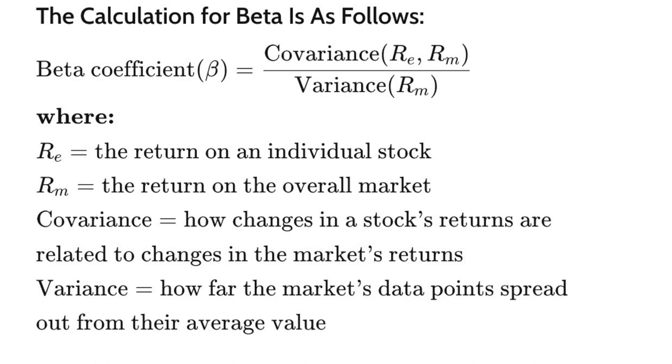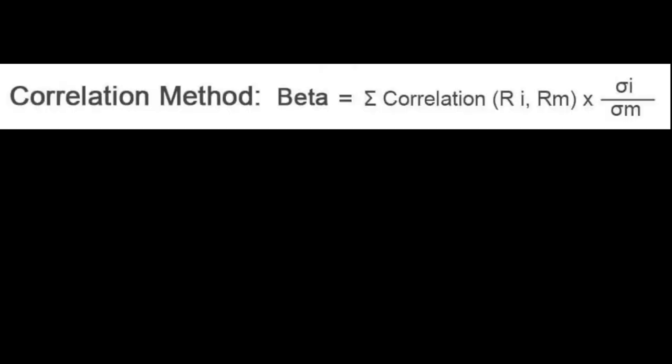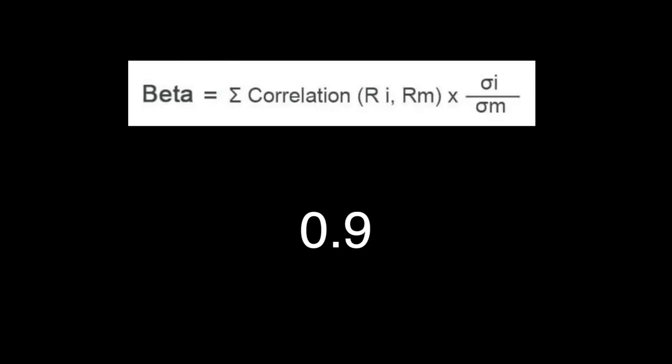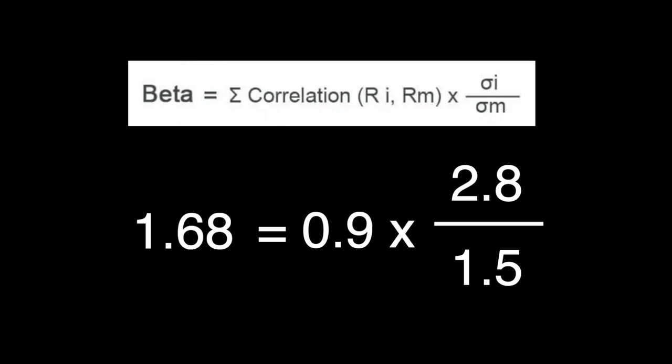Beta does change over time for all investments, so it's important to understand the fundamentals of the business to see if historical data is still appropriate. To solidify your understanding of beta, here are a couple ways to calculate it. One way is the covariance divided by variance method: find the covariance between the stock and the broader market, then divide by the variance of the total stock market. A similar method uses this formula: beta equals the correlation between the investment and the market multiplied by the standard deviation of the investment divided by the standard deviation of the market.